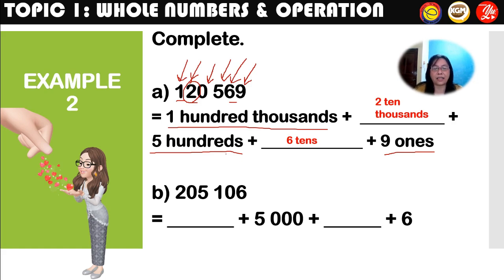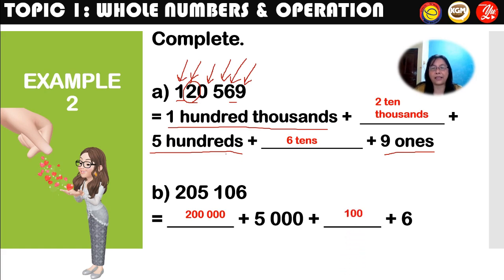The next part is partitioning the number according to its digit value. The answer for number one is: 200,000 + 5,000 + 100 + 6.